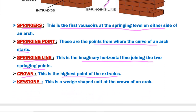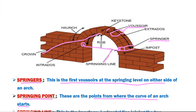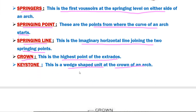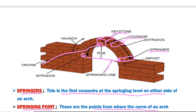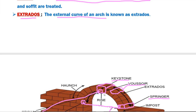The next definition is keystone. Keystone is the wedge-shaped block at the crown of an arch. The crown is the highest point of the arch. So, the keystone is the wedge-shaped unit placed at the crown of the arch.